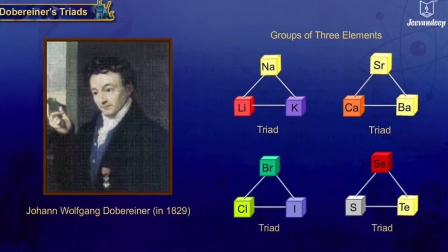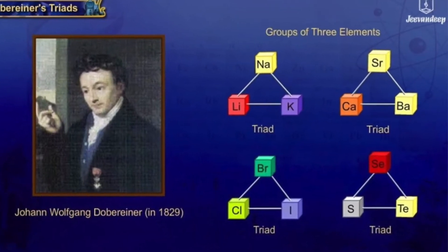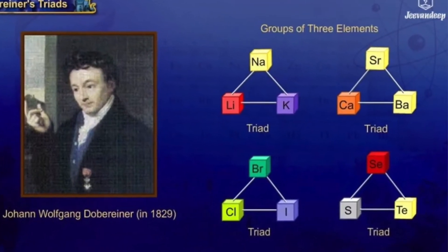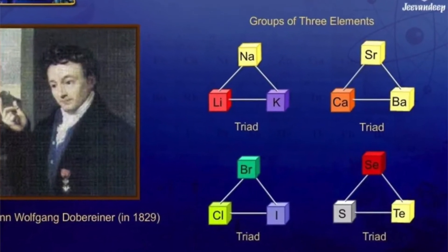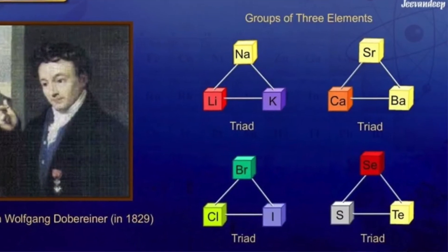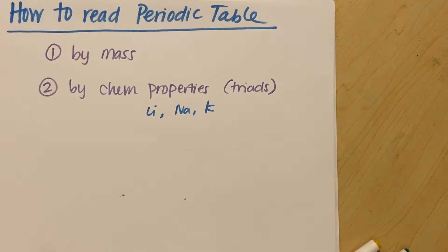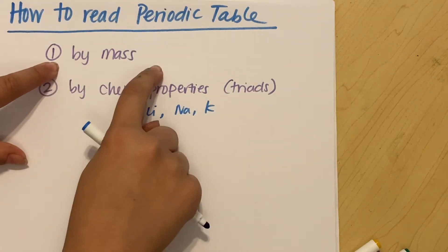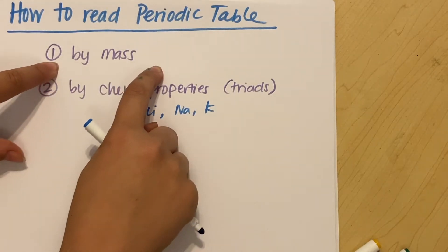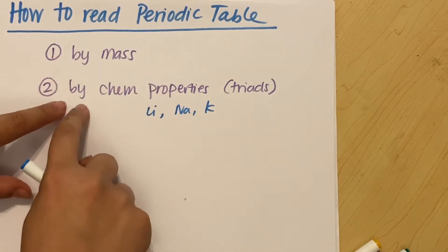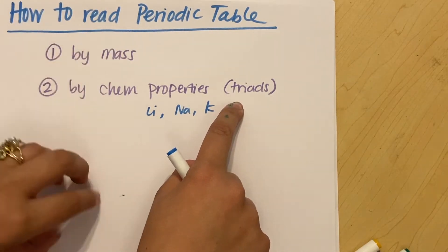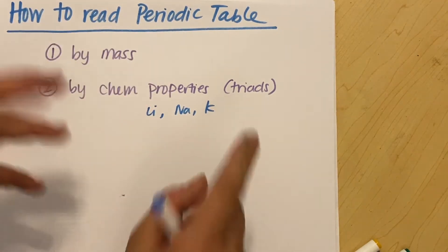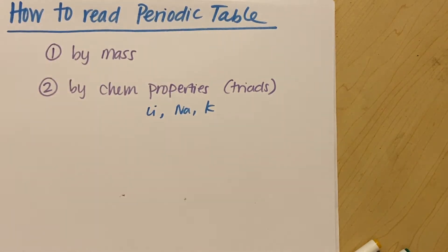The problem is then you have all these separate groups of triads and none of them seem to connect. So it was not helpful to have these big long lists by mass, and not helpful to have these disjointed triads by their chemical properties.